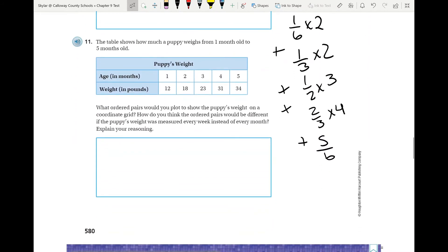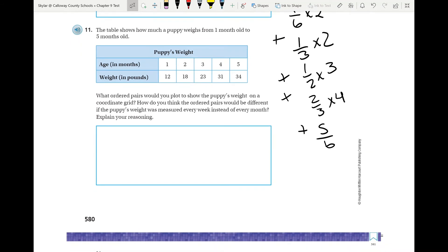So whatever your number is after adding all of this together, you'll divide it by twelve, and that'll give you your average. All right, number eleven looks like it gives you a chart, age to weight, and you need to write down how you would show that on a coordinate grid. So you need to take these and change them to ordered pairs.